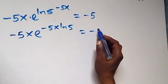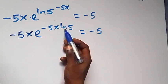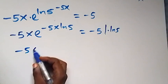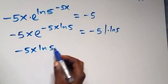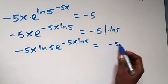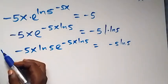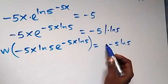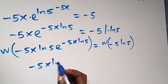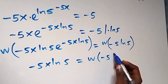Now equals to minus 5. And here the power has to be the same as the coefficient. We have ln 5 here, so we multiply both sides by ln 5. This becomes minus 5x ln 5 times e^(minus 5x ln 5), now equals to minus 5 ln 5. Then minus 5x ln 5 equals W(minus 5 ln 5).